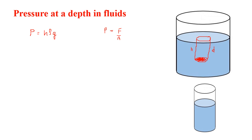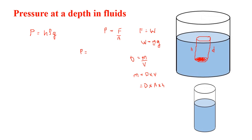Density equals mass upon volume, so mass equals density into volume. Volume equals area into height. Replacing into the formula, we get P equals W over A, which is MG over A. Mass M equals density (rho) times area times height, so substituting gives P equals rho times A times H times G over A.